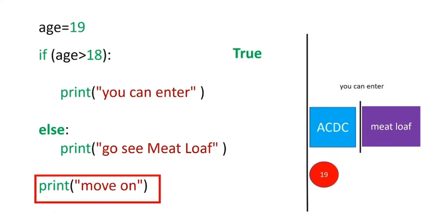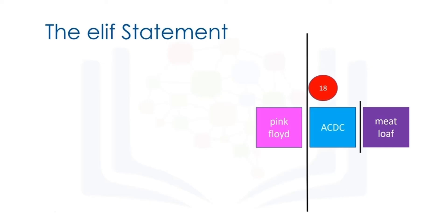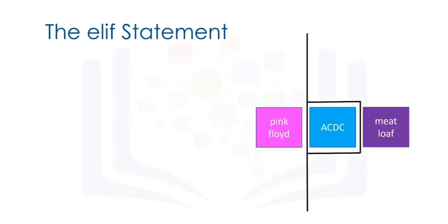The elif statement, short for else if, allows us to check additional conditions if the preceding condition is false. If the condition is true, the alternate expressions will be run. Consider the concert example: if the individual is 18, they will go to the Pink Floyd concert, instead of attending the ACDC or meatloaf concerts. A person of 18 years of age enters the area as they are not over 19 years of age. They cannot see ACDC, but as they are 18 years, they attend Pink Floyd. After seeing Pink Floyd, they move on.